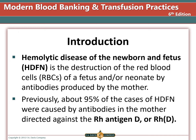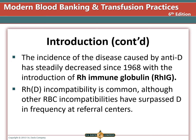In the past, about 95% of cases of HDFN were caused by antibodies directed against the D antigen. The incidence of HDFN caused by anti-D has steadily decreased since 1968 with the introduction of Rh immune globulin, sometimes called RhoGAM. HDFN caused by antigens other than D are more common now.